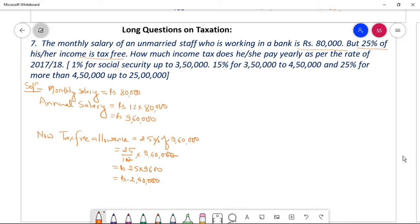Therefore, taxable amount equal to total income minus tax-free allowance. Taxable amount equal to 9,60,000 minus Rs 2,40,000. Tell me the value dear students. Can you tell me the value?